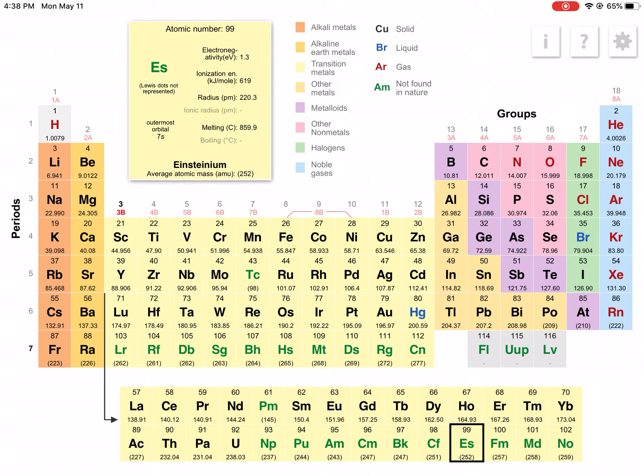And one thing that's really cool about this periodic table is that it will show you how to draw the Lewis dot diagram. So for example if I click on nitrogen, nitrogen is the fifth element in its row so it should have five valence electrons and we can see that represented in the Lewis dot diagram.